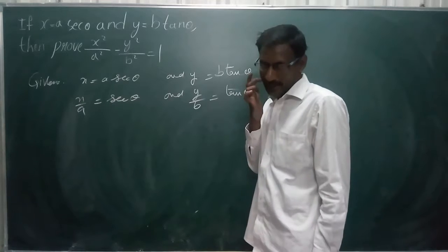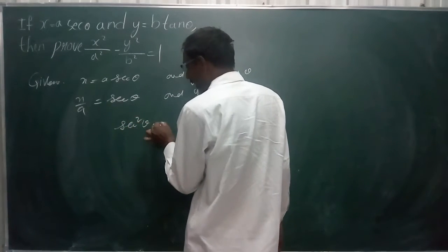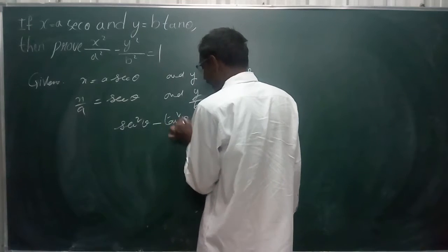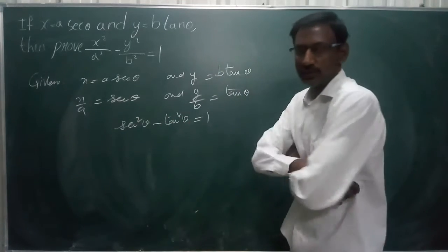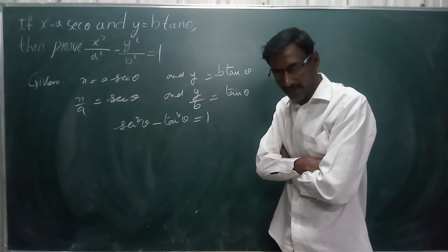We know that sec square theta minus tan square theta equals to 1. This is one identity in trigonometric ratios.